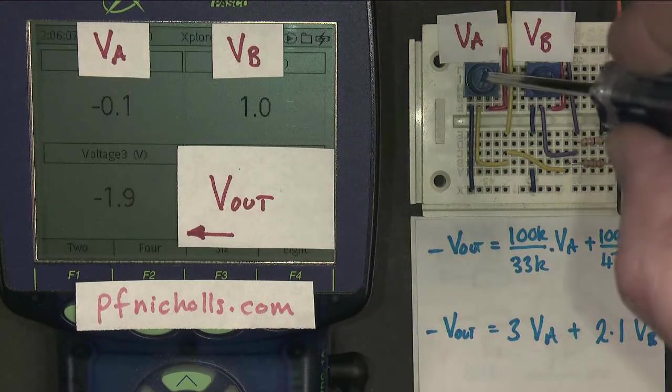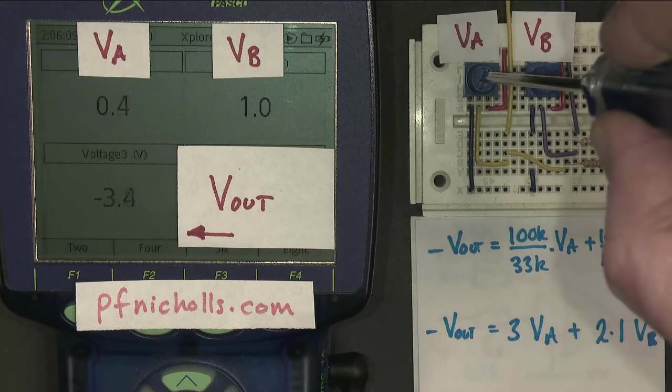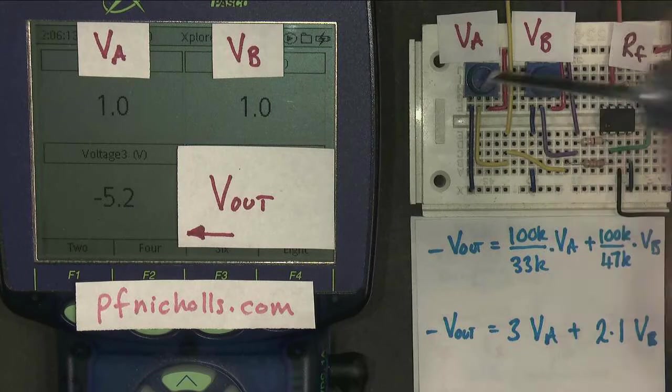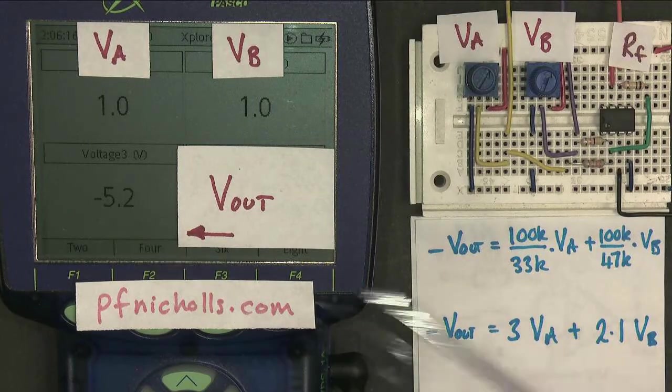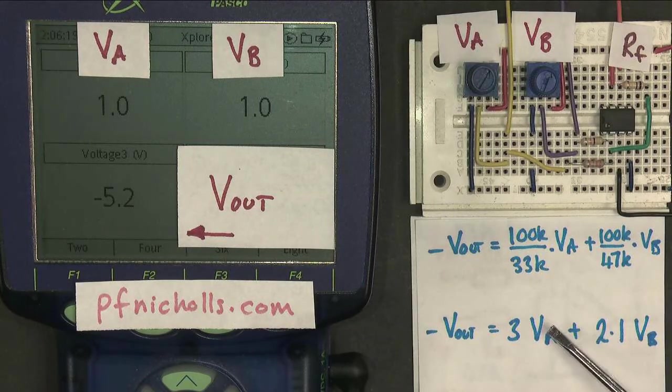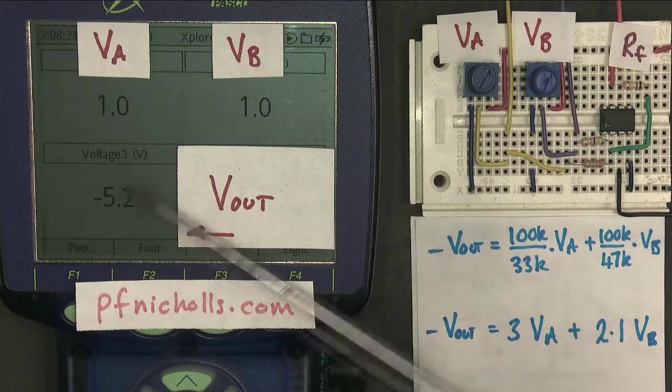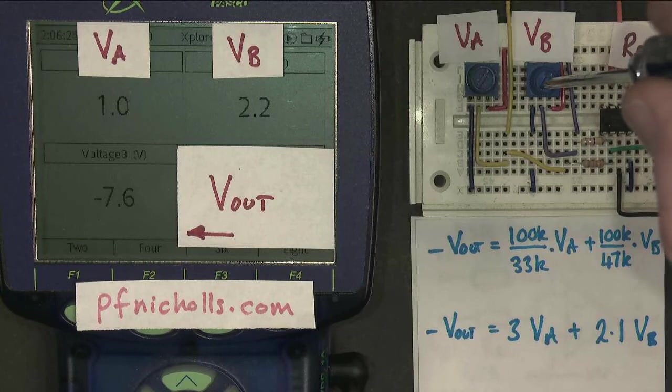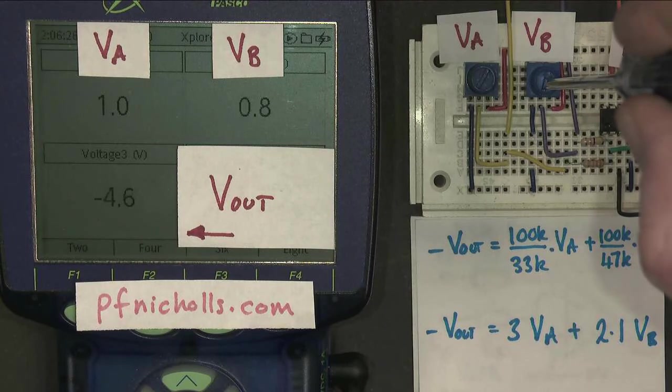If I make them both 1 volt, then I would expect the output to be, no surprises, minus 5.1 ideally. 1 times 2.1 plus 1 times 3, minus 5.1. And there it is. If I change Vb, the output changes.